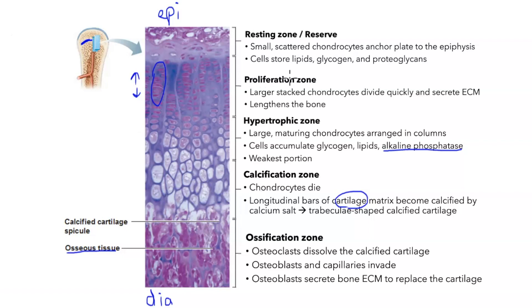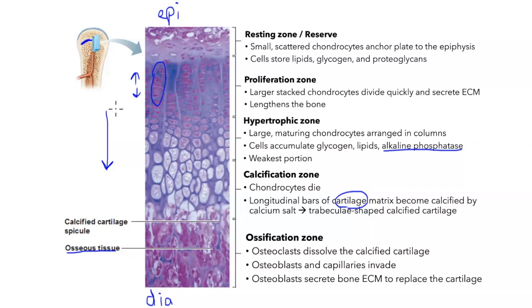All in all, the extra chondrocytes become replaced by bone. You get those from the proliferation zone, and the chondrocytes migrate downward toward the diaphysis, accumulating all of these substances, becoming calcified, dying, and being replaced by bone. This is how the bone lengthens. As more and more chondrocytes proliferate in the proliferation zone and more and more bone is created in the ossification zone, the diaphysis will lengthen and your bone will grow longer.